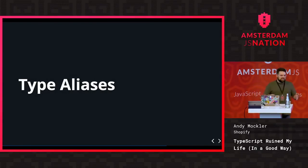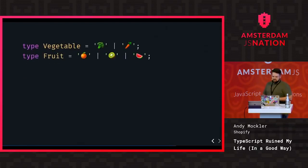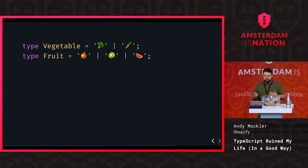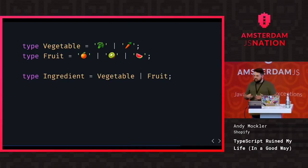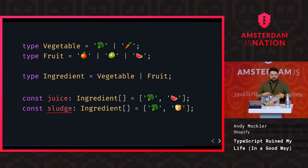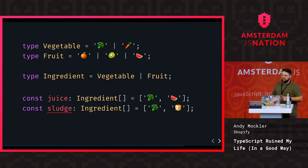Type aliases are the most powerful tool in TypeScript — they roll everything else up into one. You use the type keyword and name your type. Here I'm showing the union operator — a pipe you can think of as an 'or'. A vegetable can be broccoli or carrot; fruit can be orange, kiwi, or watermelon. An ingredient could be a vegetable or a fruit. If I give juice array broccoli and watermelon the compiler is happy, but if I give it bread — not a fruit or vegetable — it flags it.